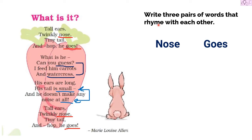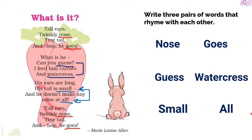The first pair is 'nose' and 'goes.' Next we have 'guess' and 'watercress.' Last, we have 'small' and 'all.' So the three rhyming pairs are: nose/goes, guess/watercress, and small/all.